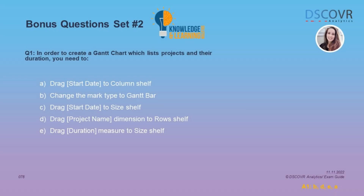For this question, you need to think about the steps you would take to create a Gantt chart — more specifically, how you would create a Gantt chart which lists projects and their duration. You will definitely see these types of questions on the exam, so make sure you can describe the steps to create a pie chart, a bar chart, a scatter plot, a histogram, a line chart, and a map.